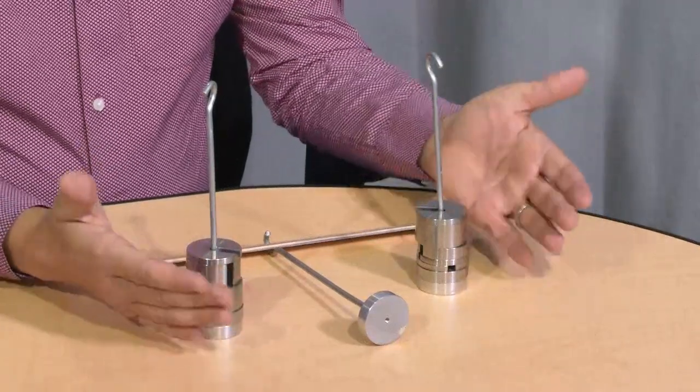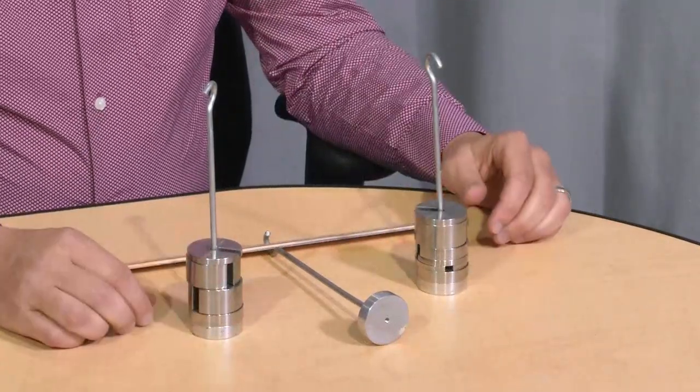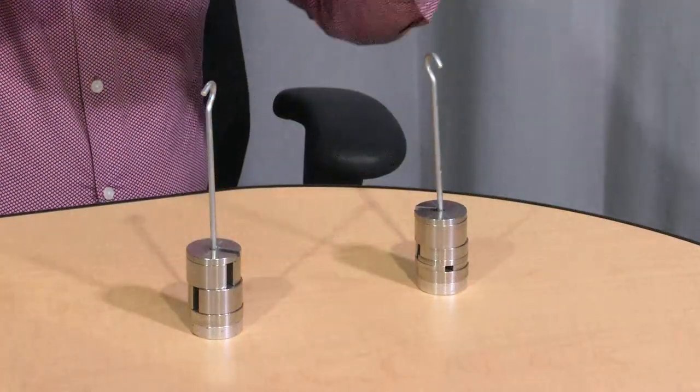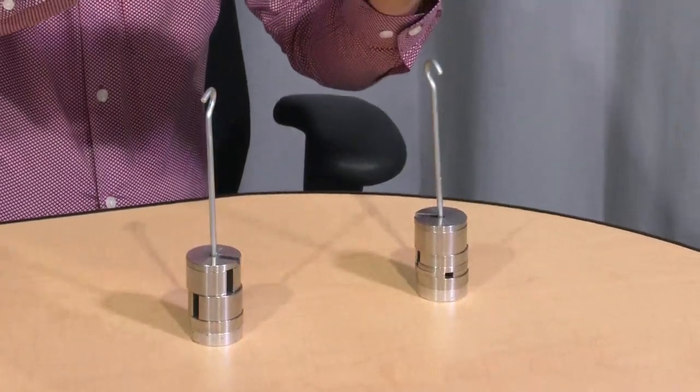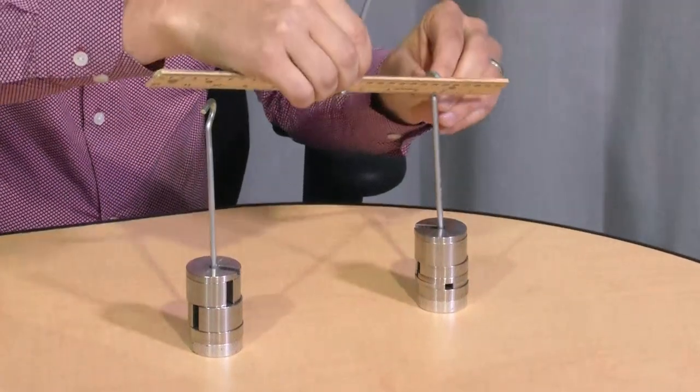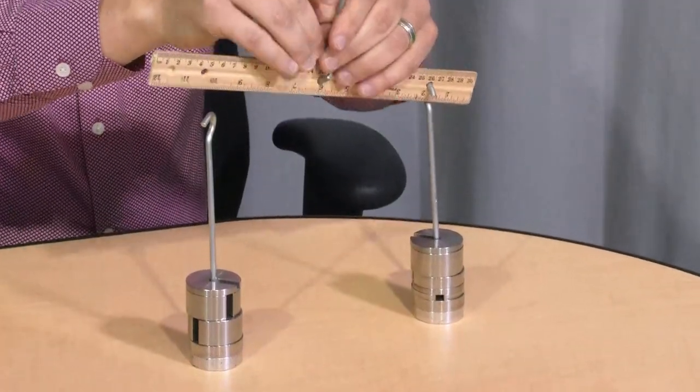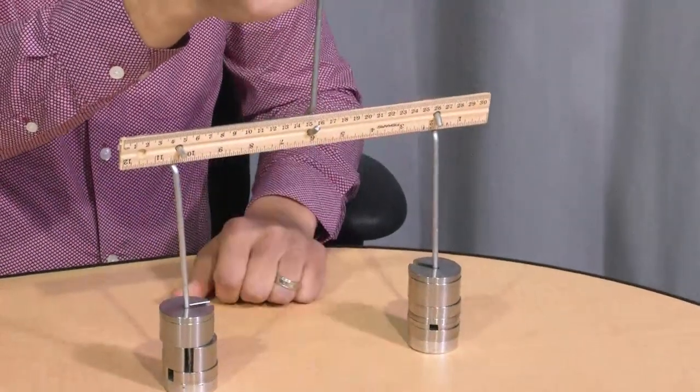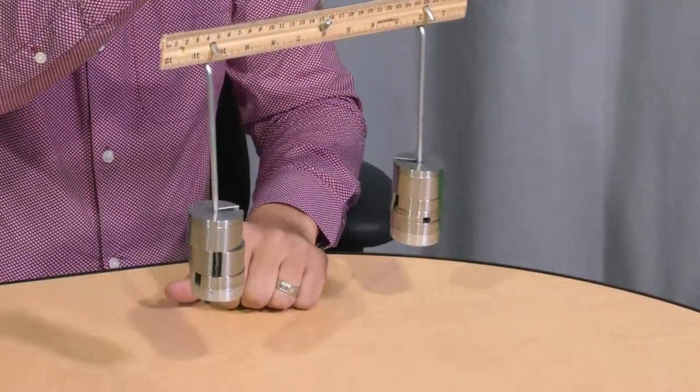Now notice these two columns are the same, so when we take the two columns and attempt to balance them, we should notice that they indeed maintain balance.